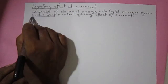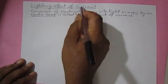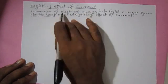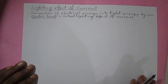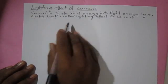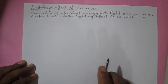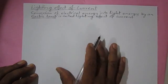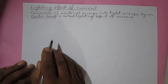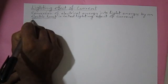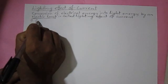Electric lamps are designed to convert electrical energy into light energy. Basically, electric lamps are of two types: one is called the filament lamp and another is called the fluorescent lamp. Now let's talk about the first one — the filament lamp.